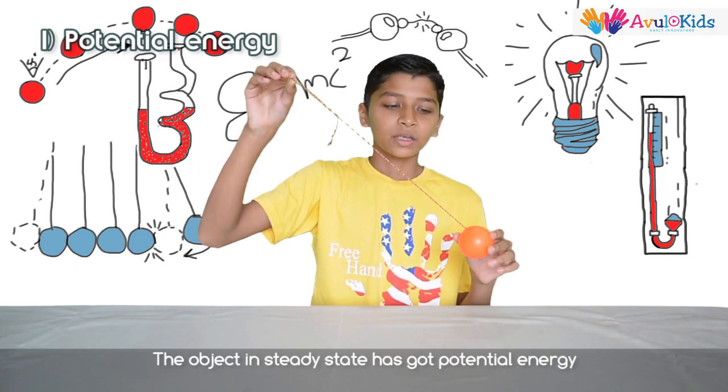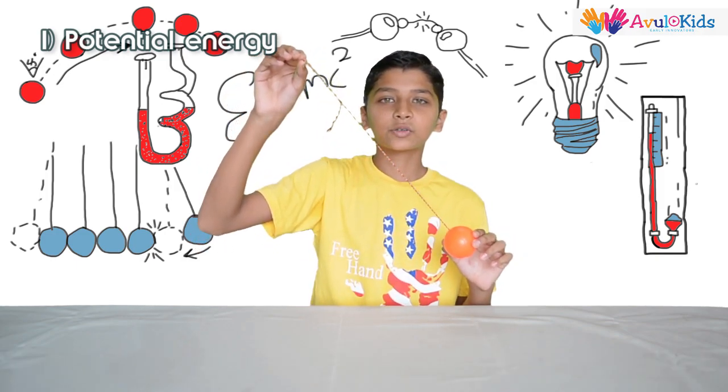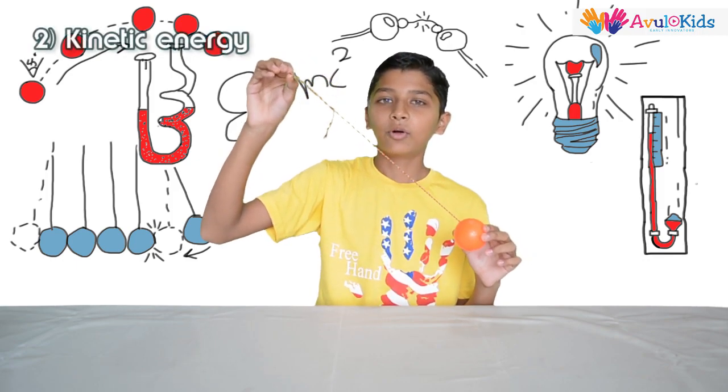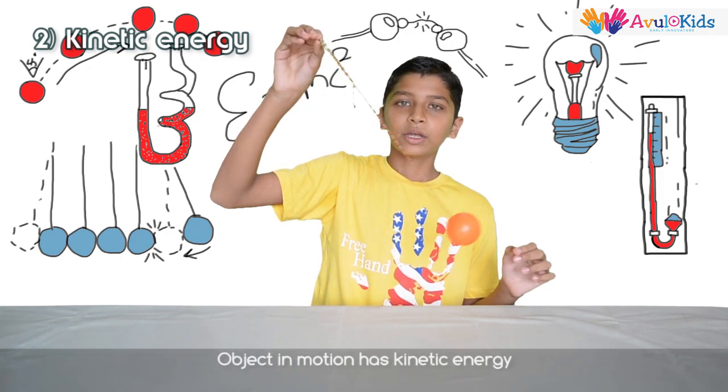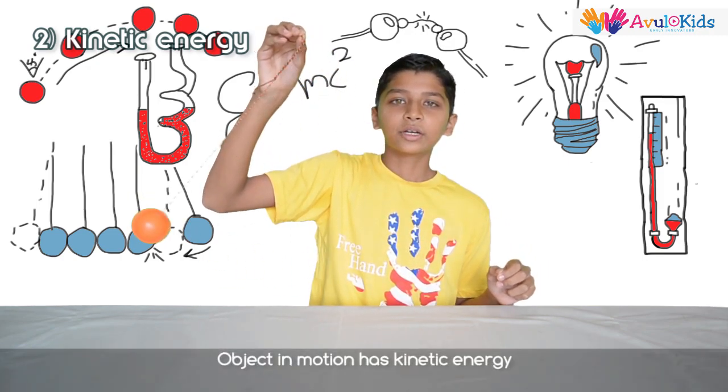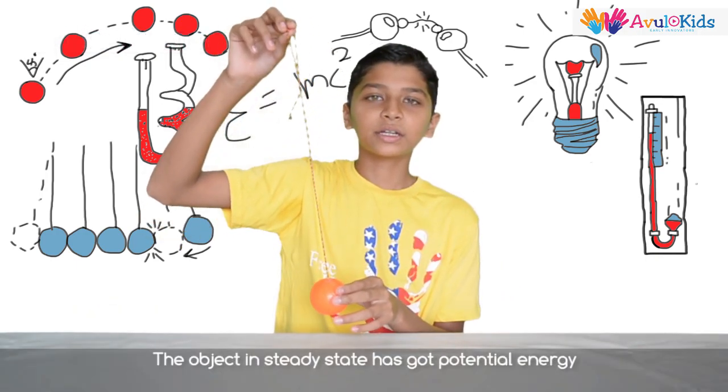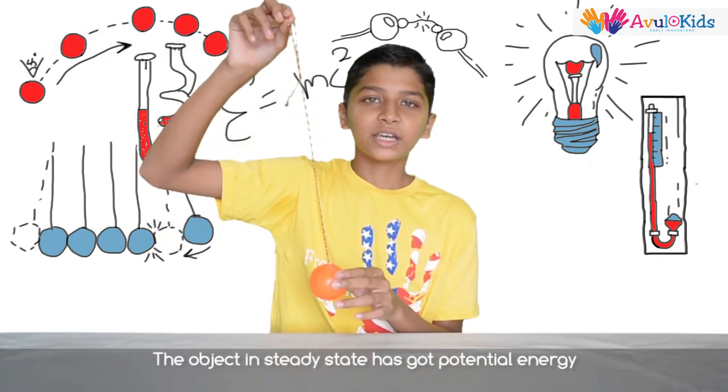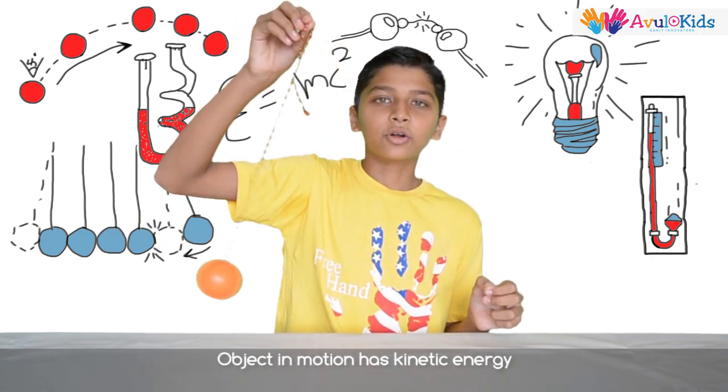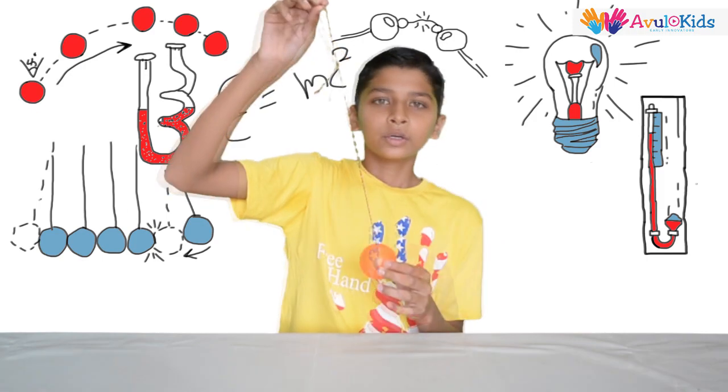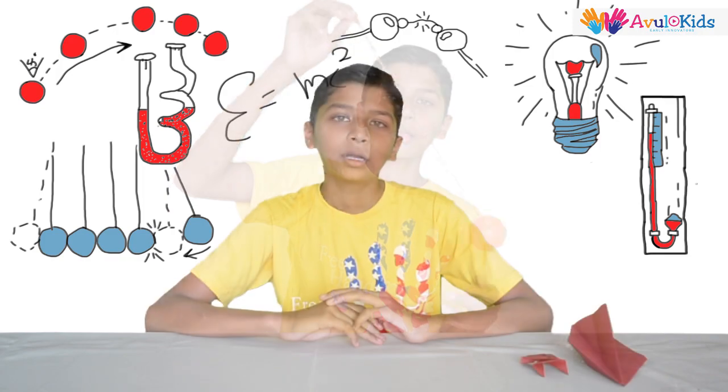The object in steady state has got potential energy. See, this ball is in steady state, means it has got potential energy. Now what happens if I leave it? It gets motion. Object in motion has got kinetic energy. An object in steady state has got potential energy and the object in motion has got kinetic energy.